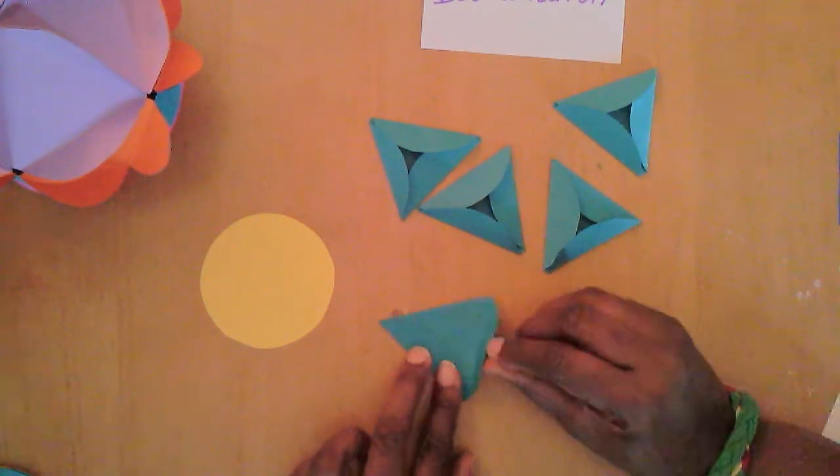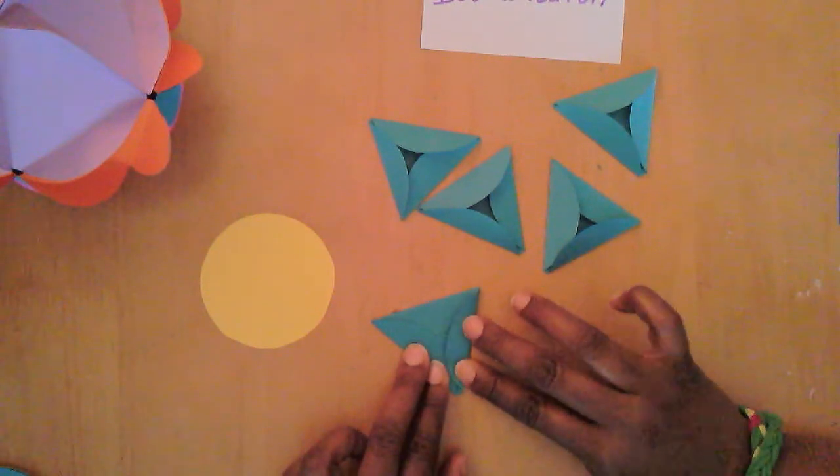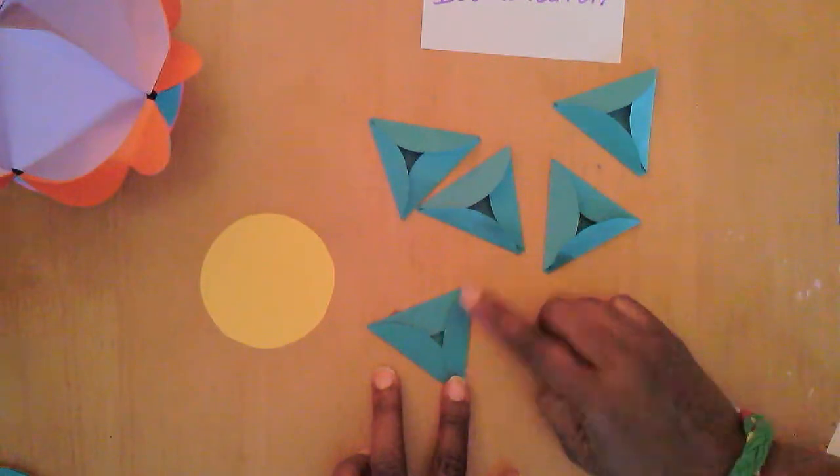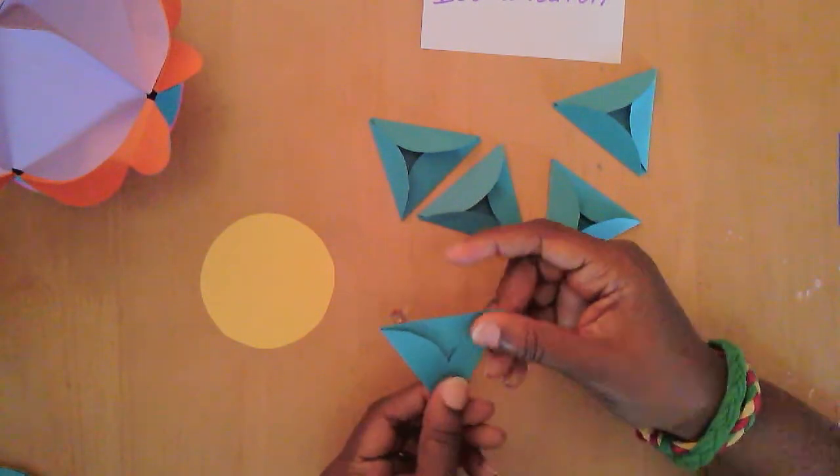And the cool part about this is when you're done folding it, you'll end up with a tiny triangle shape in the middle. Looks dark. You can see it in there. It's a little tiny triangle. Just a reminder. Triangle.